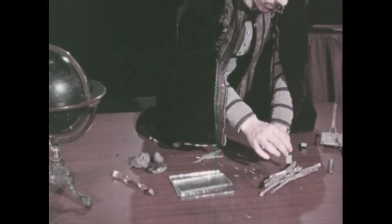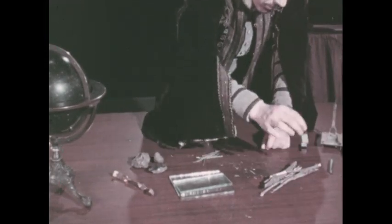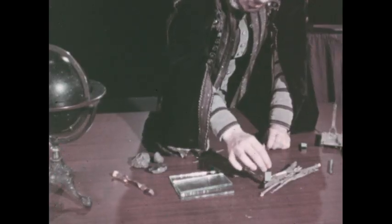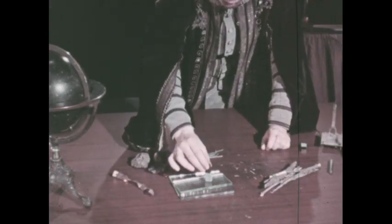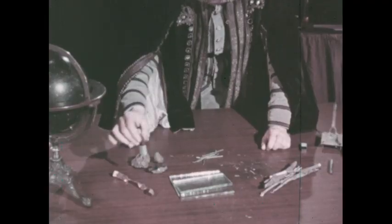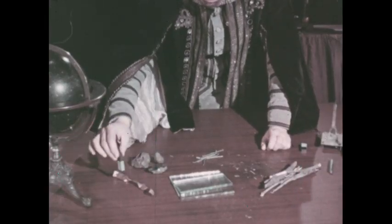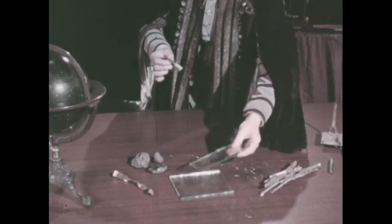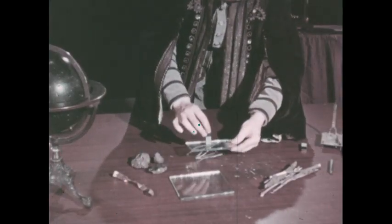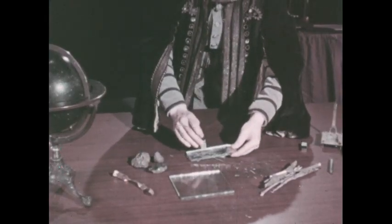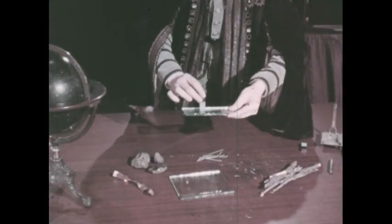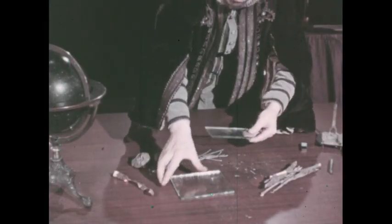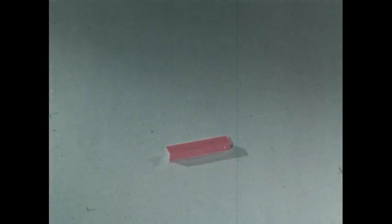He made tests to show that magnets would not attract such things as wood, glass, and many metals other than iron. He found that magnetism can pass through glass and other non-magnetic substances. Dr. Gilbert explained much about magnetism, which he called a high and splendid power. Later, men learned more about magnetism.